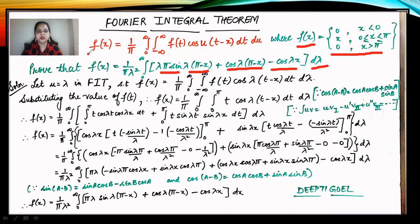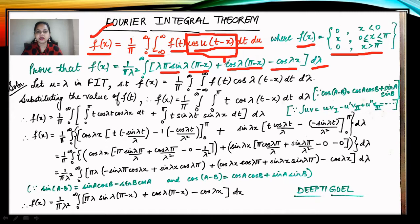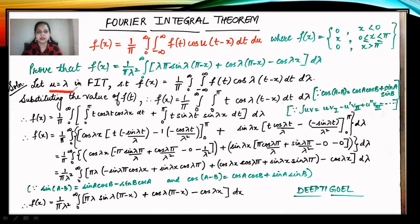The Fourier Integral Theorem states that f(x) = (1/π) ∫₀^∞ ∫₋∞^∞ f(t) cos(u(t−x)) dt du. Since we have to use this theorem and we see a term cos(ut−x), and in our result we have cos and sin terms involving (t−x), we can relate that our u corresponds to λ. So the first substitution is to set u = λ in the Fourier Integral Theorem.